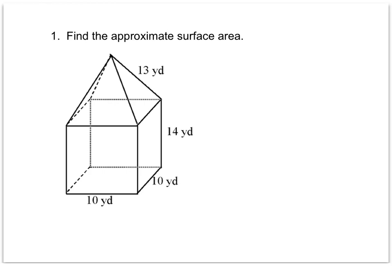In this video for Practice Problem 4, we're asked to find the approximate surface area of a composite figure. We have a rectangular pyramid that sits on top of a rectangular prism.